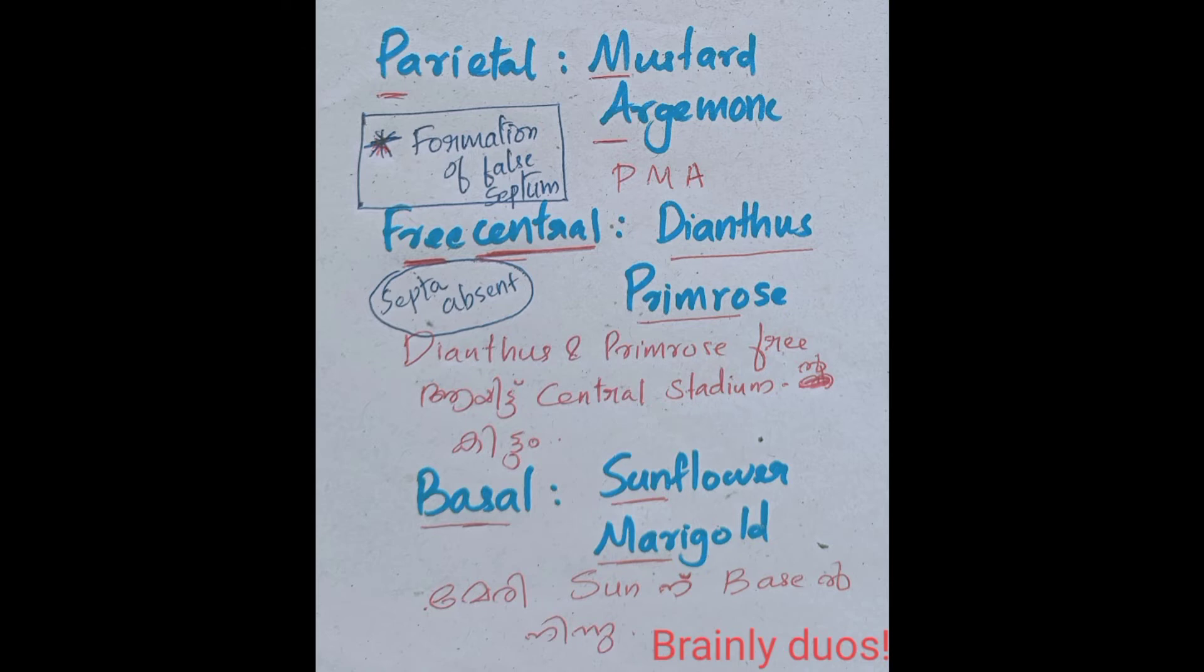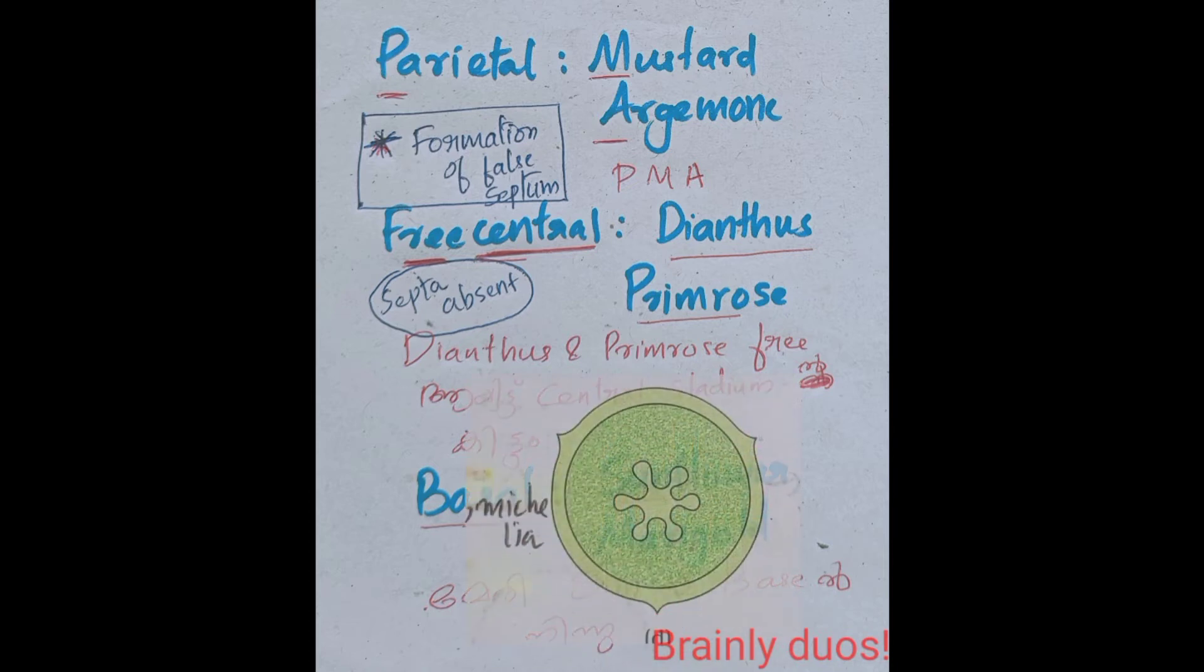The next placentation is free central. The ovules grow up in central part. The ovules become developed in central part. After a central axis, the ovules become developed in such a central valve. In the fact, ovules are formed in central.